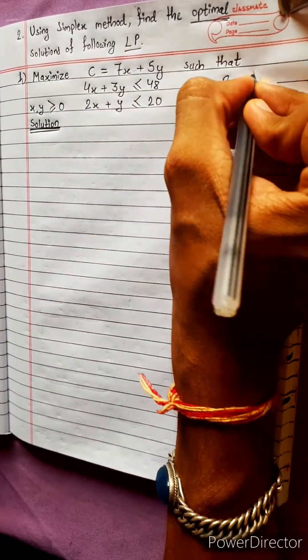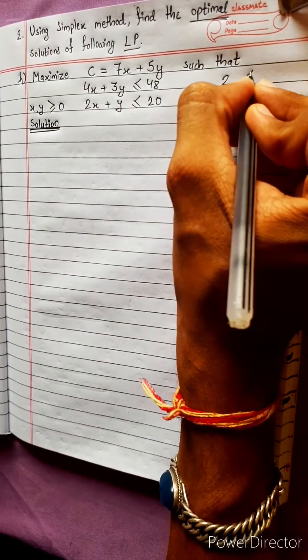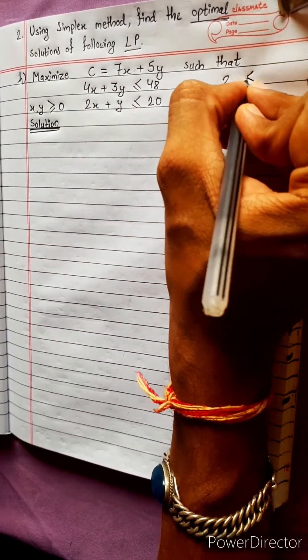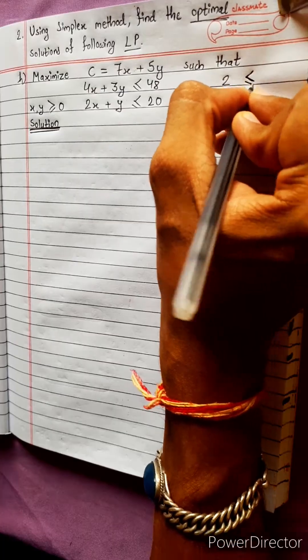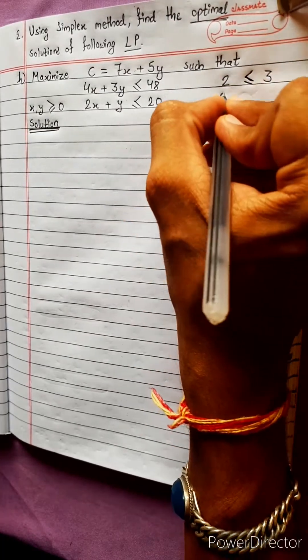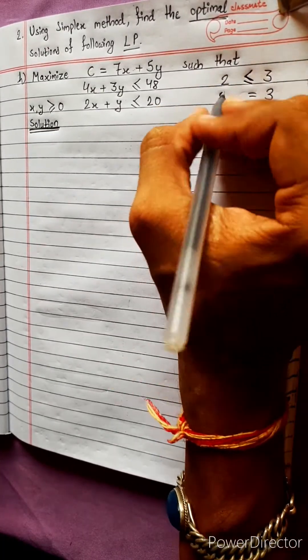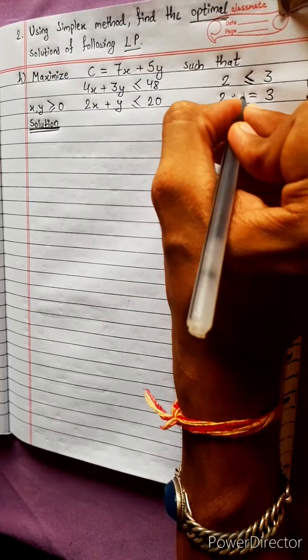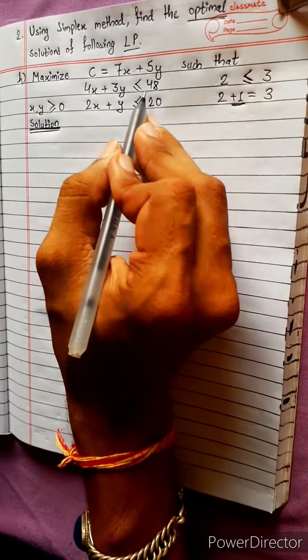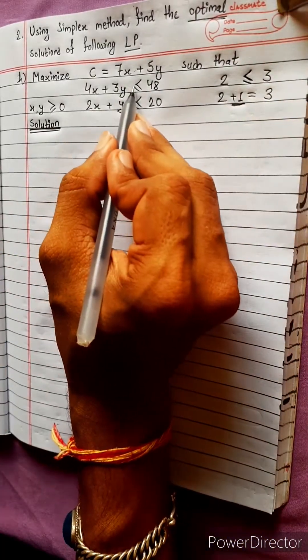The constraint is: 2 is less than or equal to 3, and 2 equals 3 plus 1, where the third element is less than.